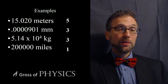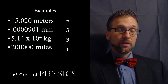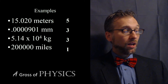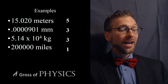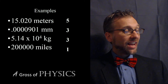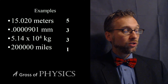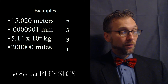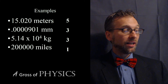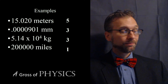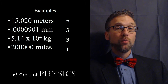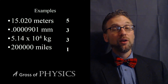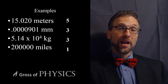For 15.020, every digit matters. The 0 between the 5 and the 2 matters because of the sandwich rule, and the trailing 0 matters because of the decimal point — so five significant figures. For 0.0000901, only the 9, 0, and 1 matter; the rest are placeholders, giving three significant figures. That could be rewritten as 9.01 times 10 to the negative 5 millimeters. For 5.14 times 10 to the 4, the 5, 1, and 4 all matter — that's three significant figures. And for 200,000 miles, only the 2 is significant, since there's no decimal place — so just one significant digit.